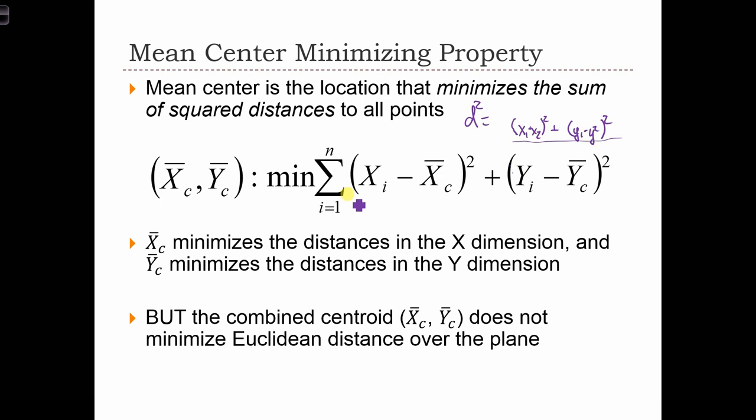And that's precisely what we have inside this summation over here. So what we are seeing here, each sum in this sum is the square distance from a data point to the mean center.